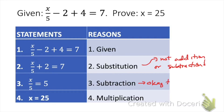In step three, we're subtracting that 2 over, but it's important to always write out the full property names. Write out 'subtraction' rather than abbreviating as 'sub' because that can be easily confused with 'substitution.' Notice that the very last step is what we're trying to prove — that x equals 25 — and we still have to give a reason there. In this case, that would be multiplication since we're multiplying both sides by 5.